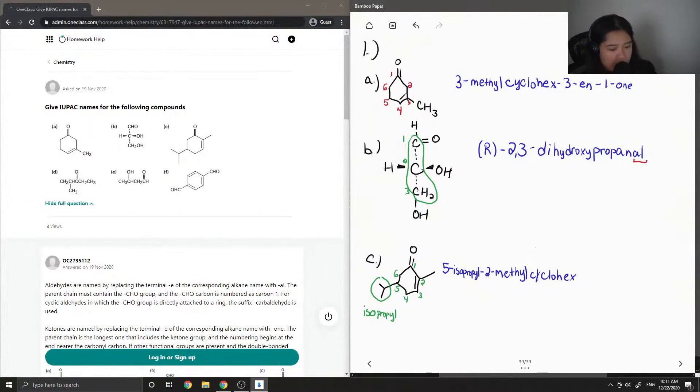Now I can write cyclohex. I'm going to show where my double bond is, so it's on carbon-2. 2-en, and then on carbon-1 is our ketone, 1-one. So 5-isopropyl-2-methyl-cyclohex-2-en-1-one.